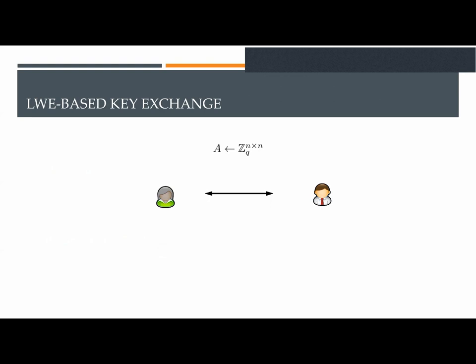Reconciliation protocols have the following form. Alice and Bob have a common public square matrix A. Then first each one of them samples a secret and an error vector, and then they exchange the corresponding LWE samples as shown in the picture. Notice that Alice creates the LWE samples by left multiplying A with the secret vector, whereas Bob uses right multiplication for his LWE samples.